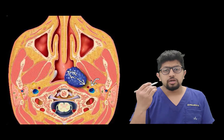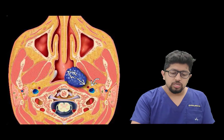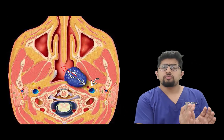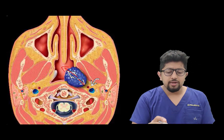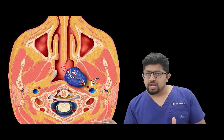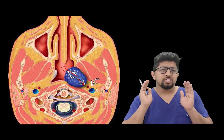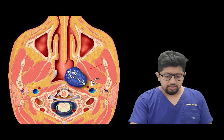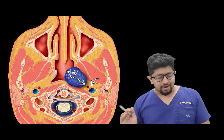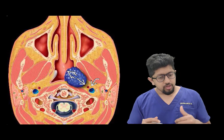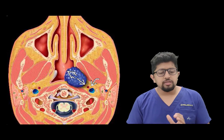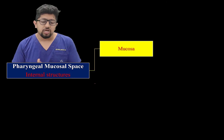When a tumor arises in the pharyngeal mucosal space, it extends medially into the nasopharynx or oropharynx, and laterally it displaces the parapharyngeal space, the carotid space, and the masticator space outward. Understanding the pharyngeal mucosal space is important because of the internal structures it contains.